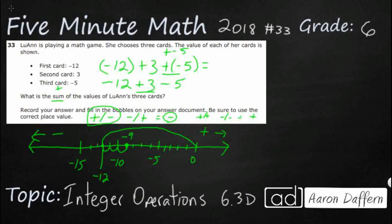Now I need to subtract 5, so that's going to go back to the left. Starting at negative 9, we jump 5 spaces to the left — 1, 2, 3, 4, 5 — and where do we end up? We end up right here at negative 14. So my answer is negative 14.